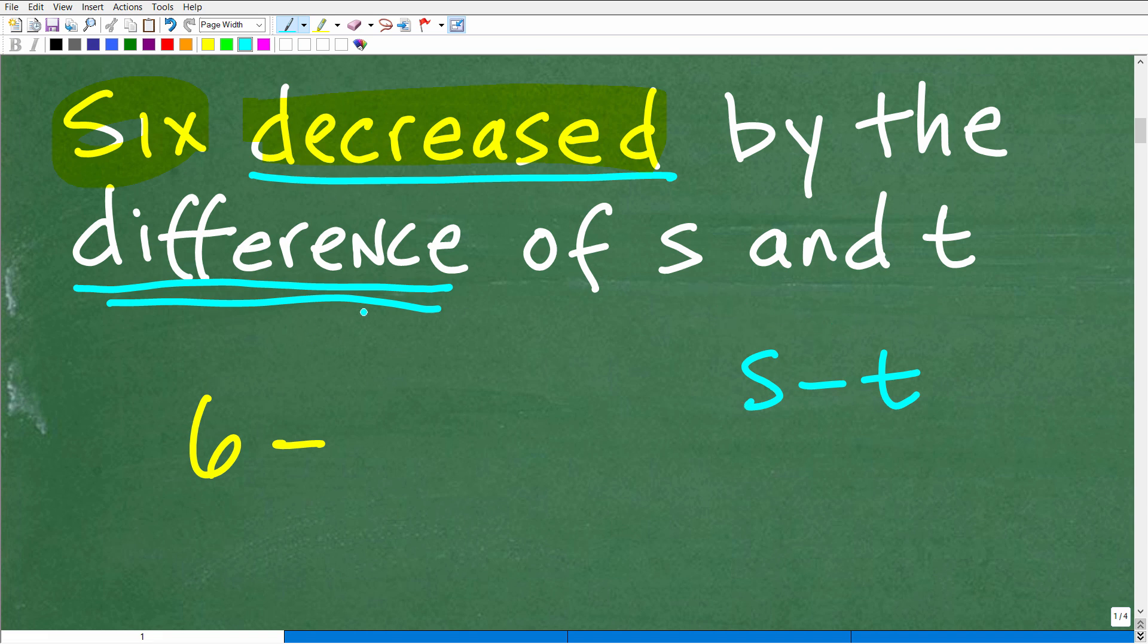All right, so here we have the difference of S minus T. And we want to take six and decrease it by the difference of S minus T. So it would make kind of sense, right? We'd say, okay, we have six and we're going to decrease it by S minus T like so. So this right here, it should be correct, right? You might be saying this seems pretty good. This is the difference of S and T and here is six and we're decreasing it by the difference of S and T.